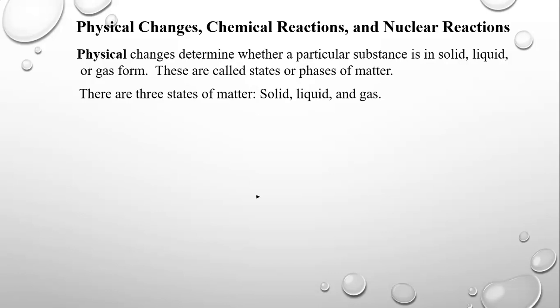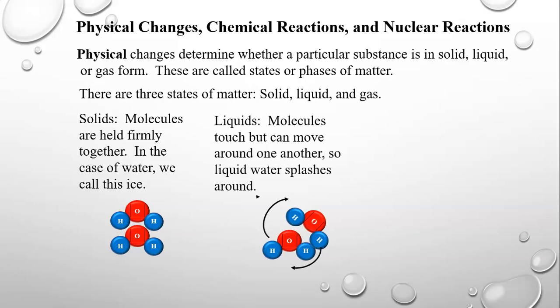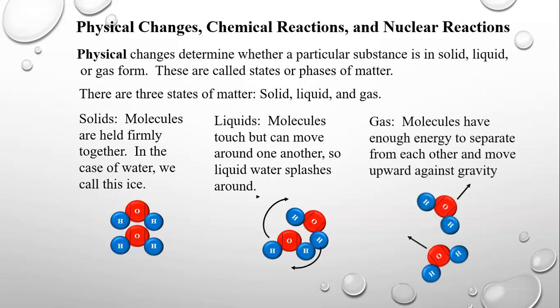Many compounds can be solid, liquid, or gas depending on temperature and pressure. Solids have molecules held firmly together — for water, that's ice, requiring low temperature so molecules don't have energy to move apart. In liquid water, molecules touch but can move around one another, which is why water sloshes in a glass. As gas, molecules have enough energy to separate and move upward against gravity — that's steam or evaporated water.